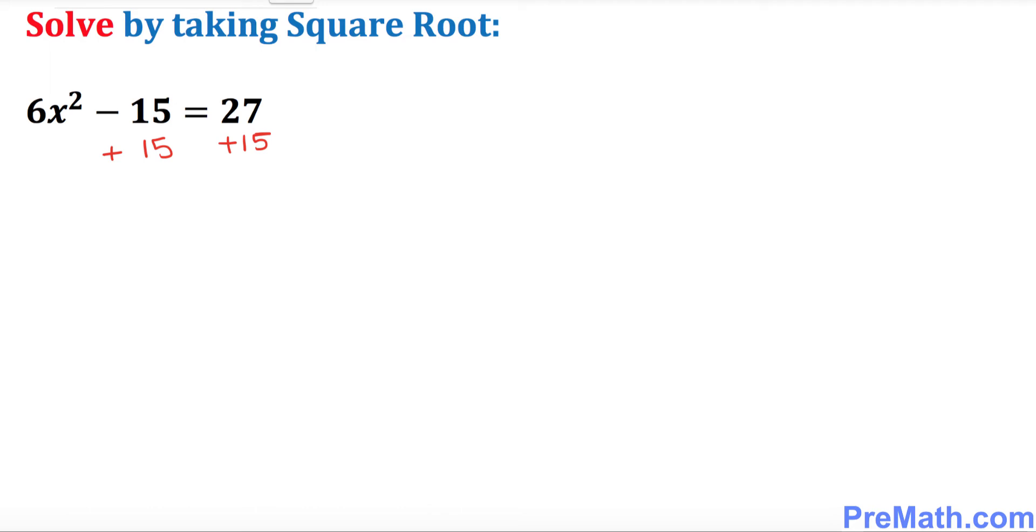So then what happens is this thing cancels out. We got 6x² turns out to be equal to 42. Next thing is I want you to simply divide both sides by 6. So 6 and 6 cancels out. We got x² turns out to be 7. 6 goes into 42, 7.